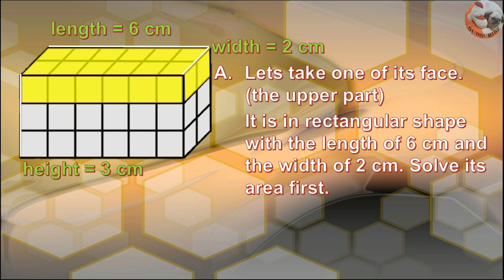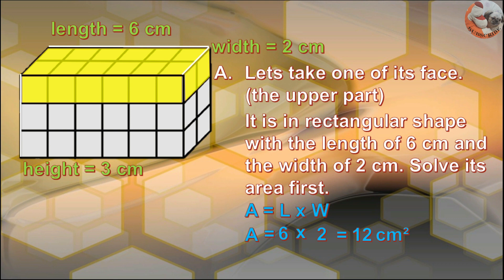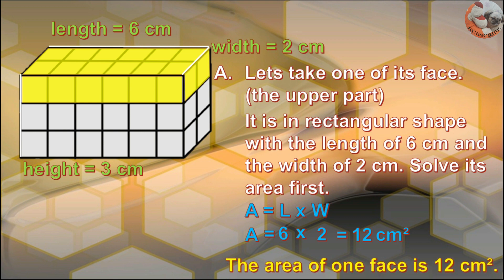Solve its area first. The formula for area is equal to length times width. Area is equal to length, which is 6 cm, times the width, which is 2 cm. Area is equal to 12 cm². The area of one face is 12 cm².